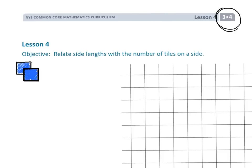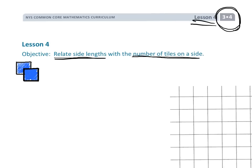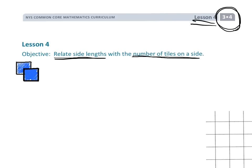This is third grade module 4 lesson 4, and in this lesson we're going to relate the side lengths to the number of tiles on a side. Basically, what that means is we're going to be getting one step closer to that standard technique for finding the area of rectangles.